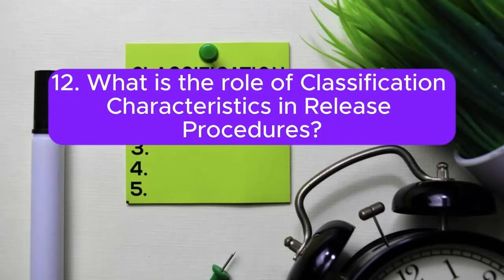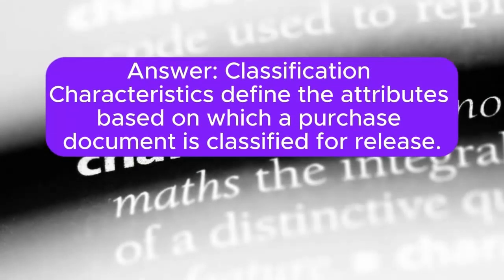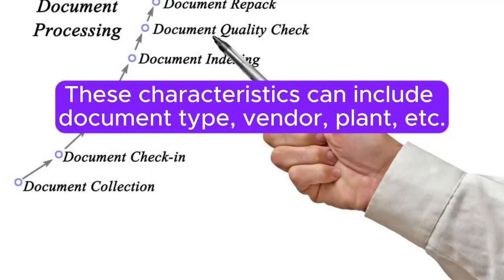Question 12: What is the role of classification characteristics in release procedures? Answer: Classification characteristics define the attributes based on which a purchase document is classified for release. These characteristics can include document type, vendor, plant, etc.